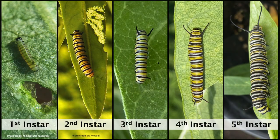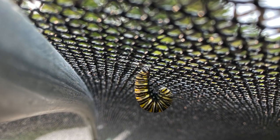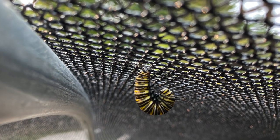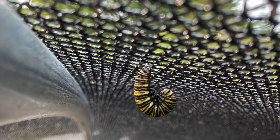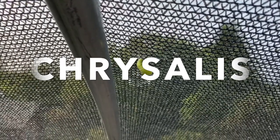As the caterpillar continues to eat, it will also shed or molt layers of skin. Each time it sheds and grows, it is now in a new instar stage. Caterpillars can go through five instar phases. When the time comes, the well-fed caterpillar makes its way to a safe place, hangs upside down, and molts into its hard, shiny chrysalis, also known as a pupa.